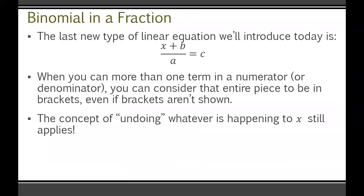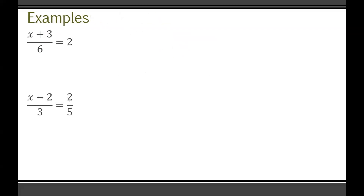Now we introduce the last new type of linear equation: X plus B all over A equals C. When you have more than one term in a numerator, you can treat that entire piece as if it's in brackets. Using reverse BEDMAS, save the brackets for last — meaning get rid of the divide by A first, then deal with what's inside. Let's look at some examples.